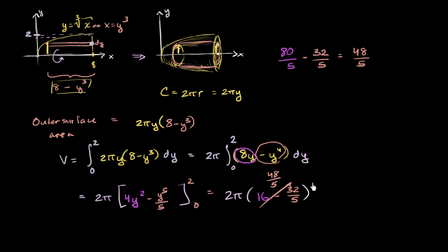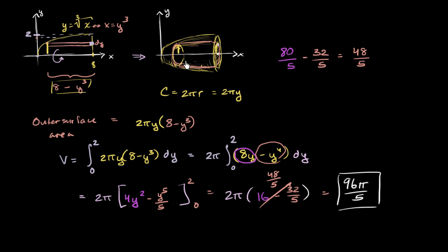So this is 48 over 5 times 2π. 48 times 2 is 96, giving us 96π over 5. This is something you could have solved using the disk method in terms of x, and we've just shown that you can also solve it using the shell method — or the hollowed-out cylinder method — in terms of y.